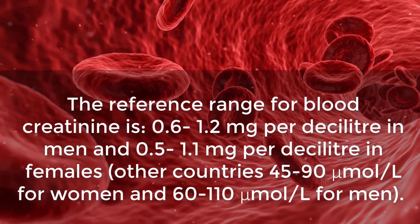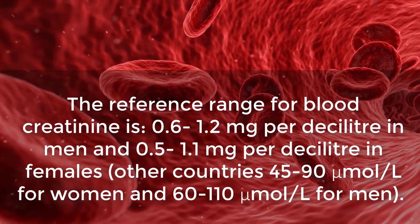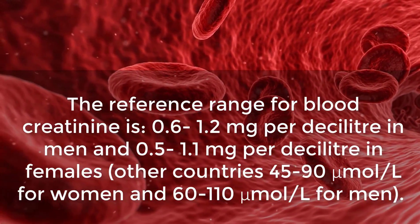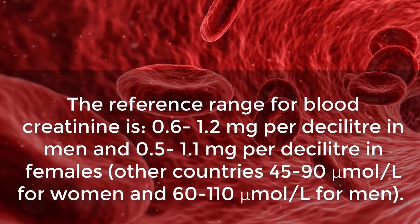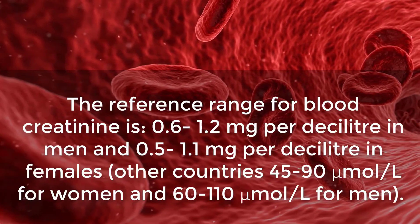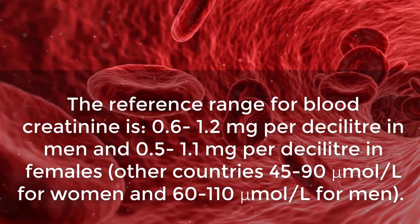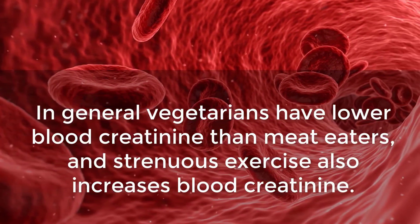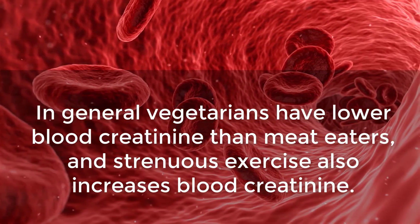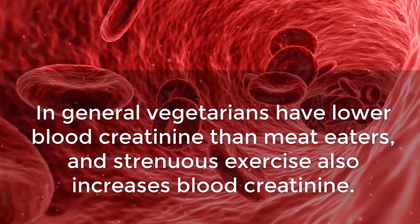The reference range for blood creatinine is 0.6 to 1.2 milligrams per deciliter in men and 0.5 to 1.1 milligrams per deciliter in females. In other countries, the ranges are 45 to 90 micromoles per liter for women and 60 to 110 micromoles per liter for men. In general, vegetarians have lower blood creatinine than meat eaters, and strenuous exercise also increases blood creatinine.